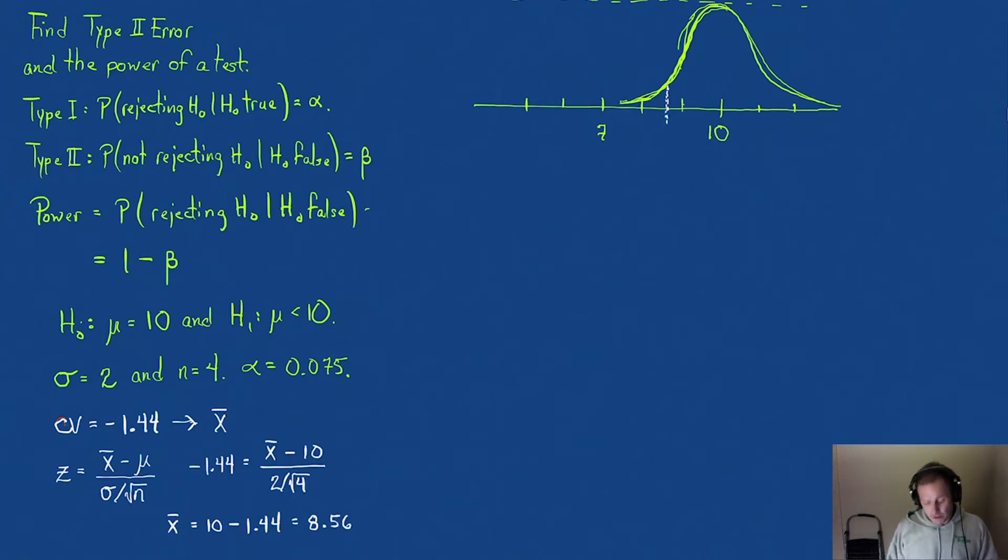My data value that corresponds with alpha is 8.56. The probability that X̄ is less than 8.56 is our alpha value, and that is also the probability of rejecting the null hypothesis. If your null hypothesis is correct, then that would be a Type 1 error.